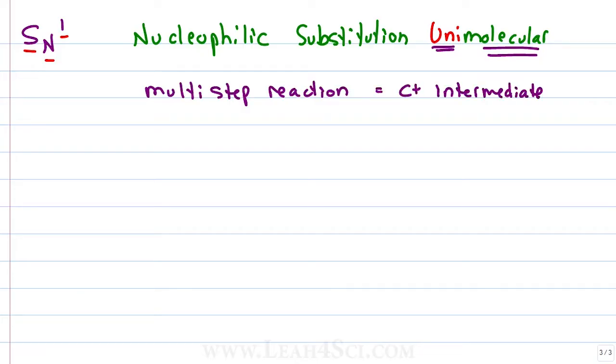SN1 and E1 reactions have a carbocation, SN2 and E2 do not have intermediates therefore they will never have a carbocation.